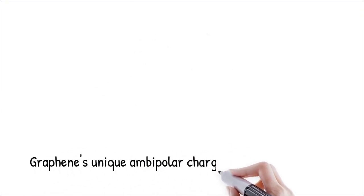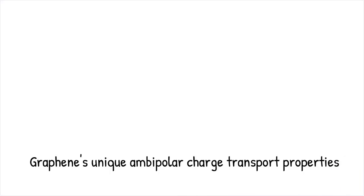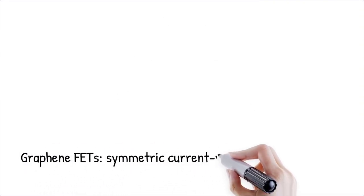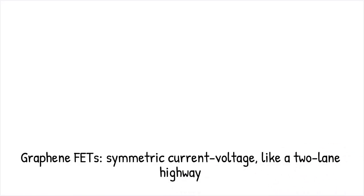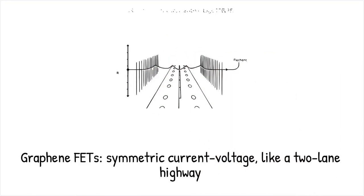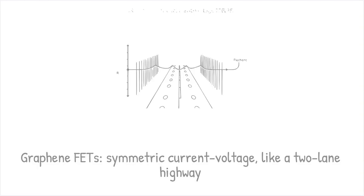Graphene's charge transport differs from conventional semiconductors due to its symmetric conduction and valence bands, allowing seamless switching between electron-like and hole-like carriers. This ambipolar behavior means graphene can conduct both negative and positive charge carriers with similar efficiency, unlike silicon-based materials where electrons and holes have distinct mobilities. Graphene field-effect transistors (FETs), for instance, exhibit nearly symmetric current-voltage characteristics, making them ideal for flexible and ultra-fast electronics. While conventional semiconductors act like one-way streets, graphene behaves like a two-lane highway where electrons and holes move equally well in opposite directions.